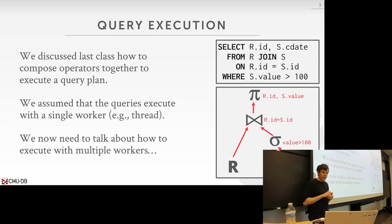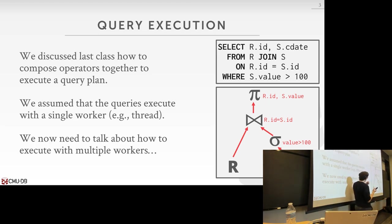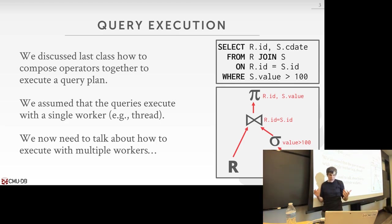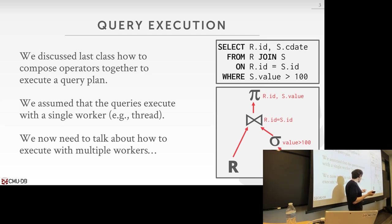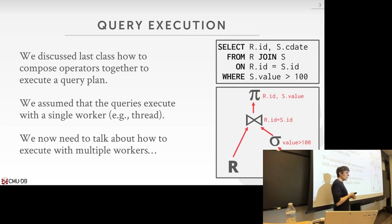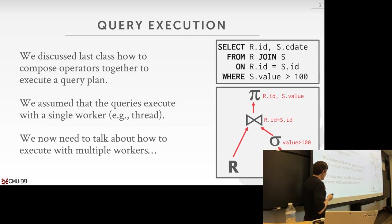For the most part in the last class, you could assume we were talking about single-thread execution — one thread calling next at the root, using the iterator model going from top down, and one thread doing everything. But as we've discussed, we know how to build thread-safe concurrent data structures. We could have multiple workers or threads operating simultaneously, and then combine it all together into a single result handed back to the application or whoever invoked the query.